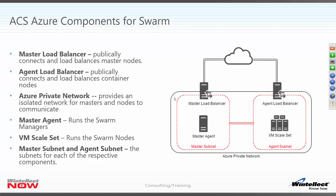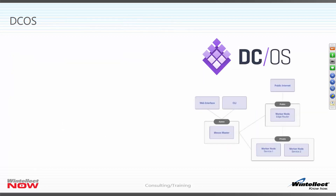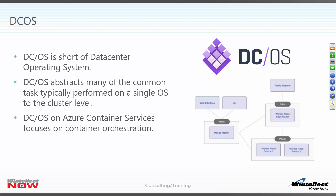Now let's talk about DCOS — it has a similar architecture to Swarm where you have a master and then your agents. The difference is that DCOS by default exposes both a public and private subnet. You have worker nodes running on the public side and some running on the private subnet, which adds some additional complexity to the environment.